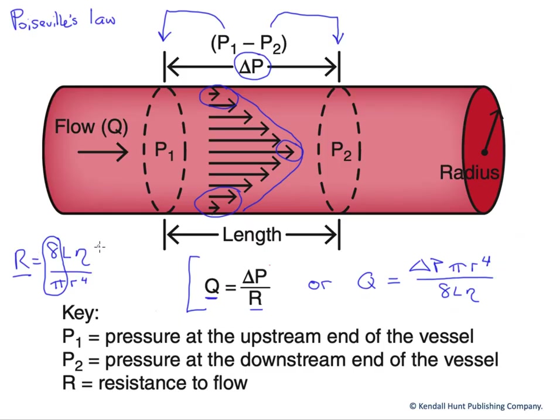But most importantly over here, we have the radius down here on the bottom, and it is to the fourth power, which makes it immensely important. And we note that the resistance to flow is inversely proportional to the radius. So as the radius gets larger, the resistance would get smaller by a lot, because of this to the fourth power component.